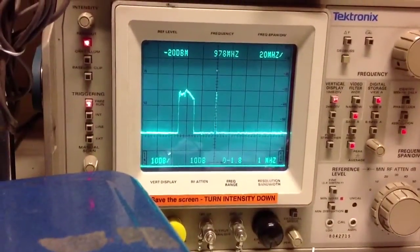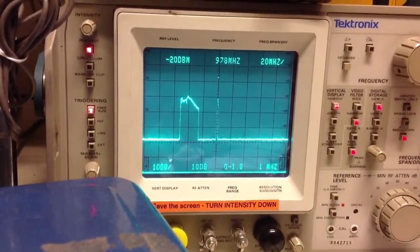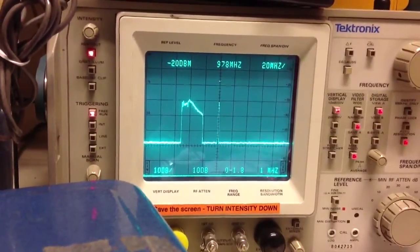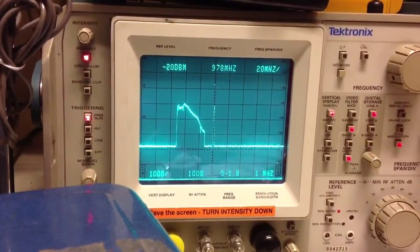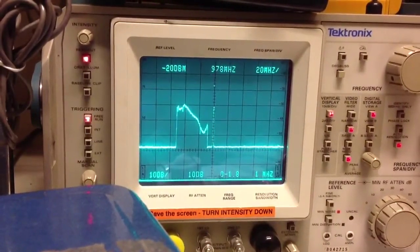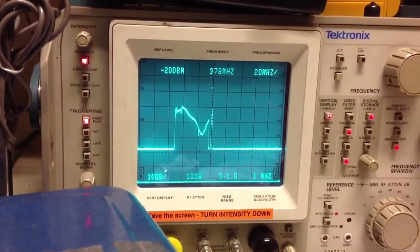So now what I've done is I've put the spectrum analyzer in peak hold and the signal generator on sweep, and we're just sweeping the frequency from below 978 to above 978, and we're going to see exactly where the antenna resonates.